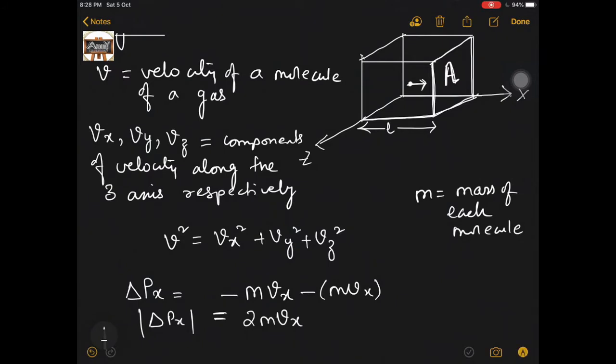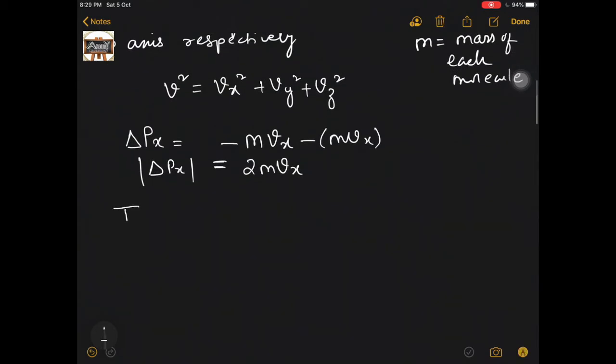As you can see, for this molecule to go and hit vessel A, it is traversing a distance L and then again back L, so the total length traveled is L plus L, which is 2L. So the time taken for one collision is length 2L divided by velocity Vx.